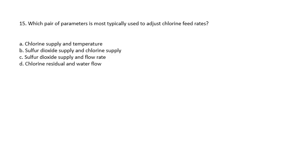Question 15: Which pair of parameters is most typically used to adjust chlorine feed rates? Chlorine supply and temperature, sulfur dioxide supply and chlorine supply, sulfur dioxide supply and flow rate, or chlorine residual and water flow. The answer is chlorine residual and water flow.